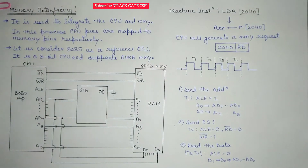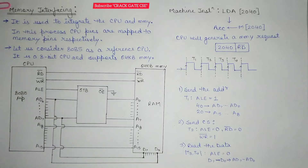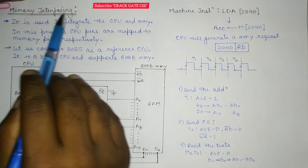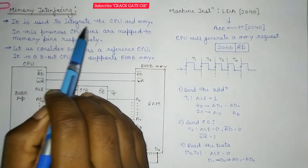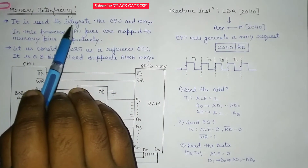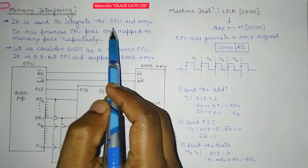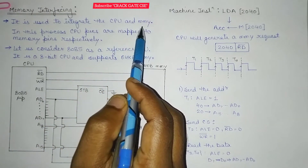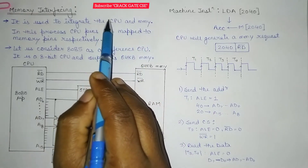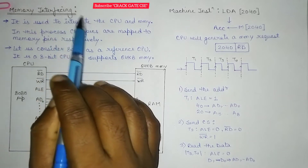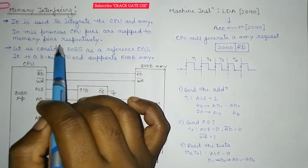Here we have the memory interfacing diagram and we will understand this in detail. So what is memory interfacing and why is it used? It is used to integrate the CPU and memory. The integration is required because the CPU is a word-addressable memory and memory is byte-addressable. To provide synchronization between the CPU and memory, we have to use memory interfacing. In this process, CPU pins are mapped to the memory pins.